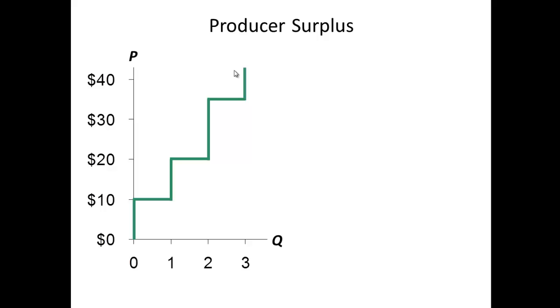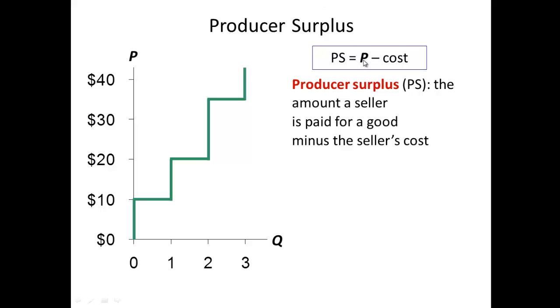Now when we talk about producer surplus, remember that the definition of producer surplus is the price that they sell their good or service for minus cost. We in economics call that producer surplus. In other disciplines within business, whether it's management, accounting, marketing, or finance, when you take the price minus cost, that is profit. In economics it's producer surplus.